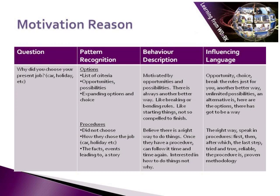On the other hand, with someone with a preference for procedures, they believe there is a right way to do things and once they have a procedure they can follow it time and time again. They tend to be interested in how to do things, not why. So in influencing language you'll want to include words like must, have to, got to. Saying something like first you must do this and next you have to do that will suit this preference, as well as language like the right way, first, and then, after which, the last step is, it's a tried and trusted method, it's reliable, it's a proven methodology.